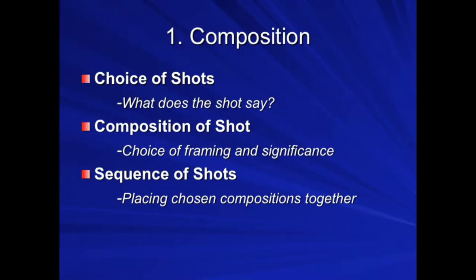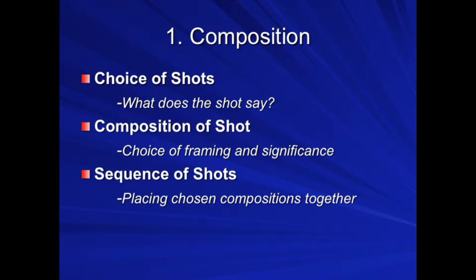In this clip I want to talk about composition. Composition is essentially where you choose to put the camera and what you choose to be in that frame. This is about the choice of shots — you've got to think about what the shot really says and what it adds to your film, how it drives the narrative forward, the choice of framing and its significance, and also the sequence of shots — placing the chosen compositions together. Think about how these compositions will cut together and flow to drive your narrative forward and make sense of the film.